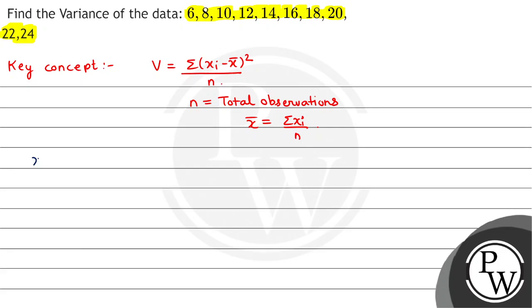We have our observations: 6, 8, 10, 12, 14, 16, 18, 20, 22, 24, and the total number of observations is 10.